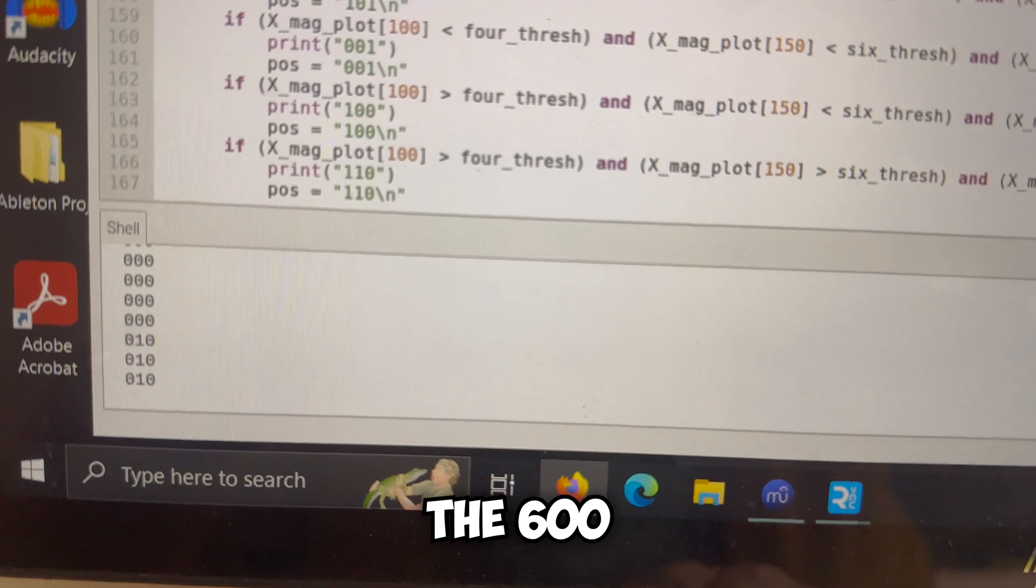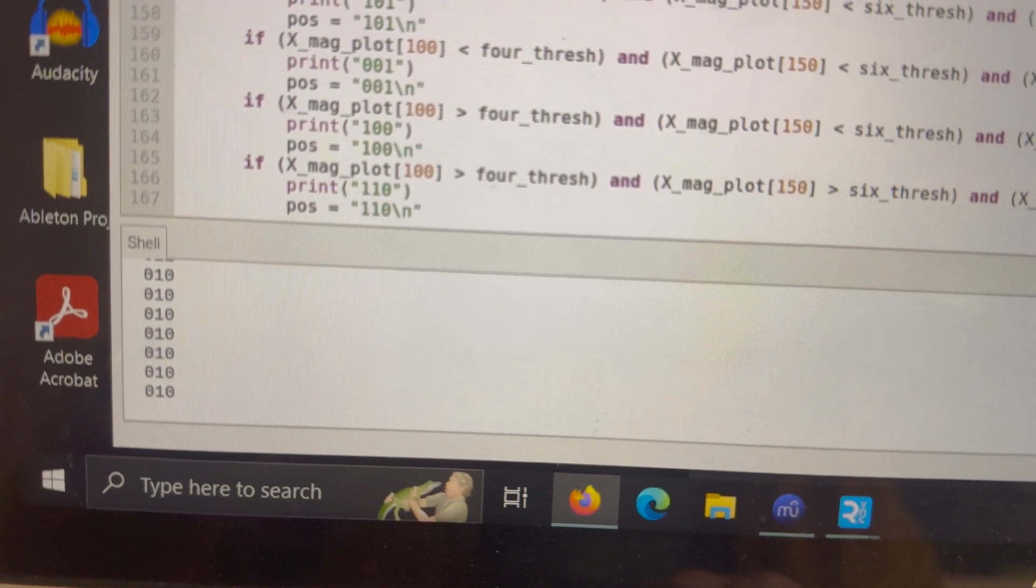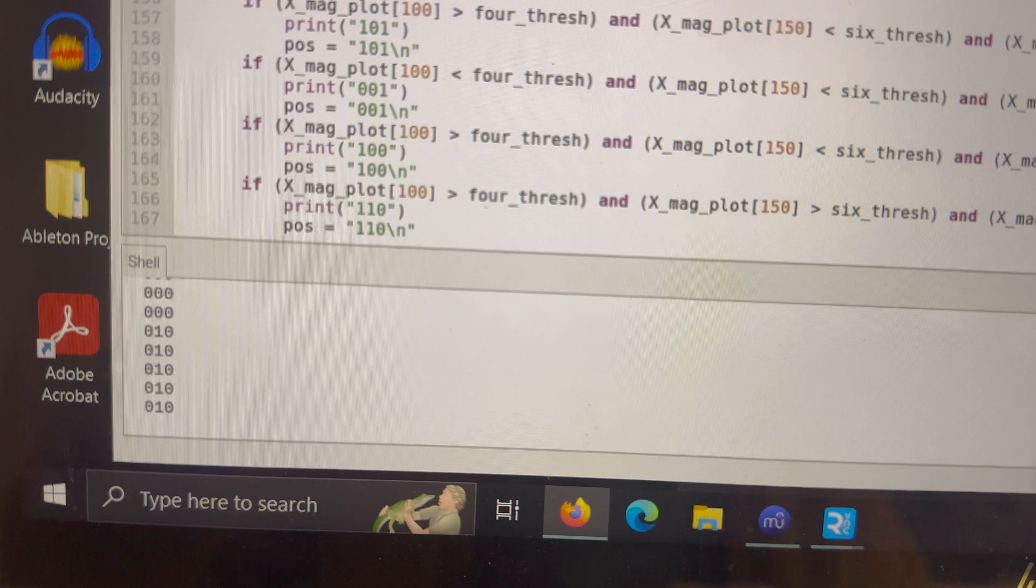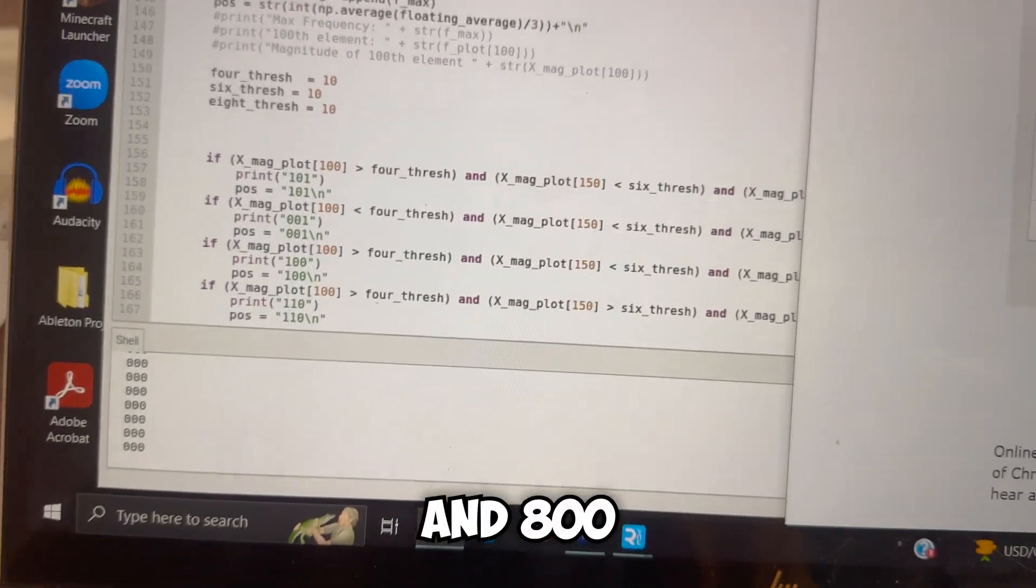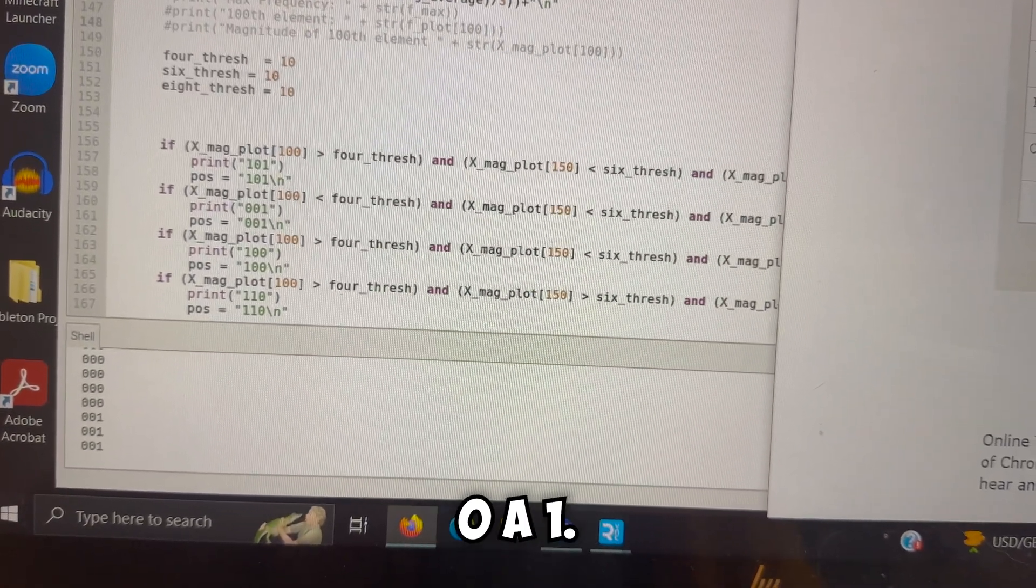Now let's play the 600Hz tone. An 800Hz tone should make the third zero a 1.